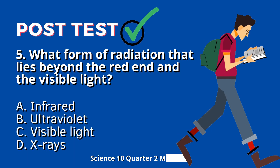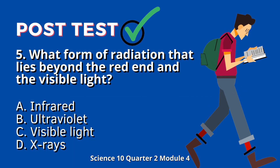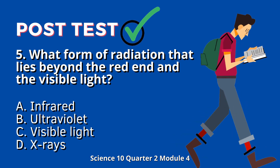Question 5: What form of radiation lies beyond the red end of the visible light? A. Infrared. B. Ultraviolet. C. Visible Light. D. X-rays.